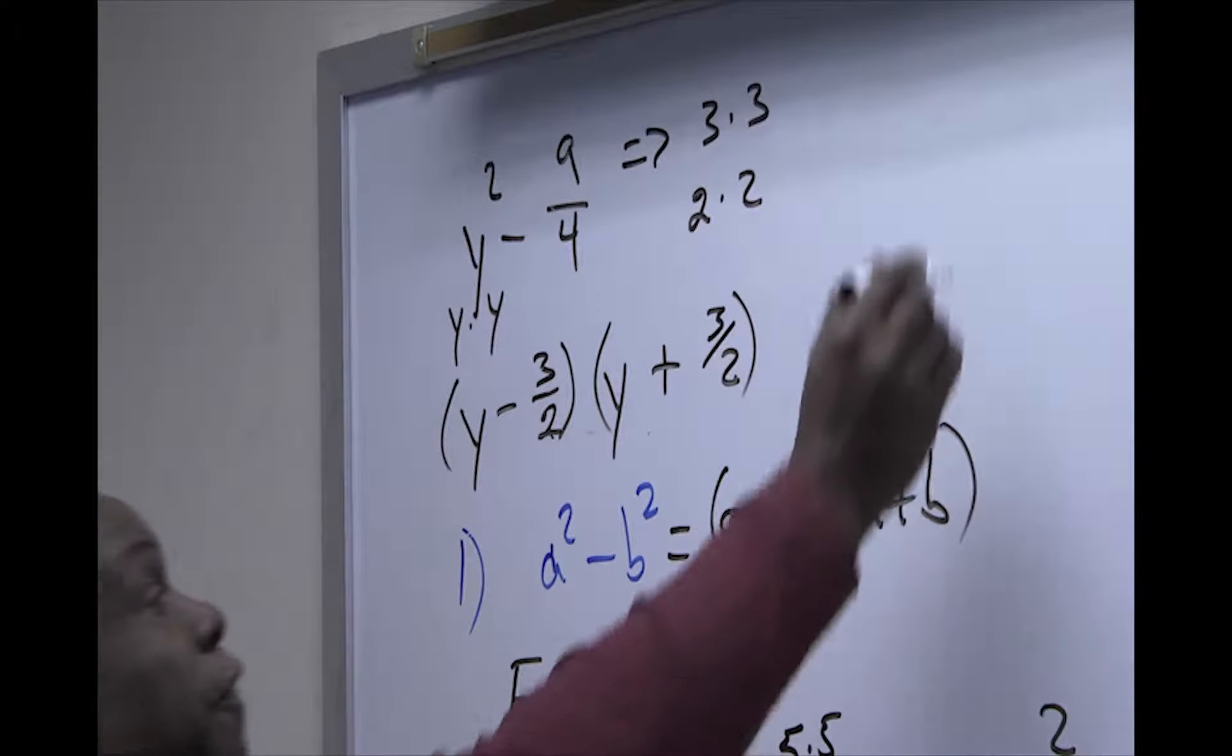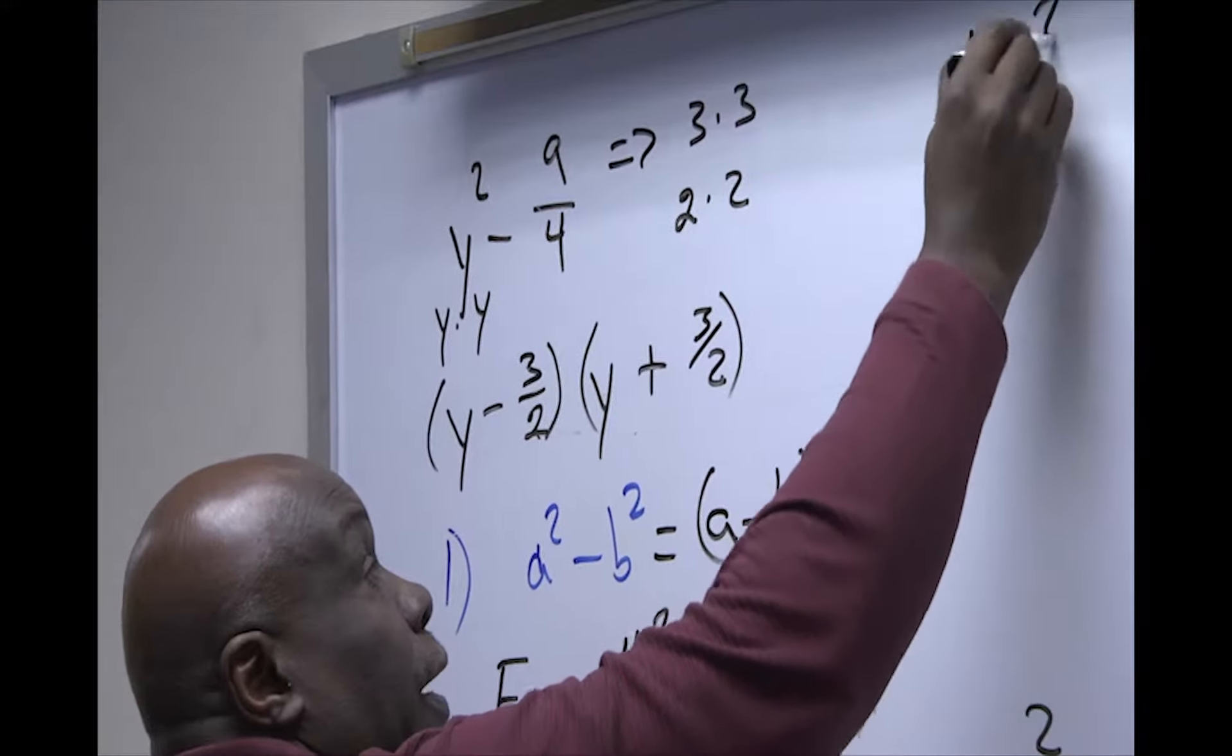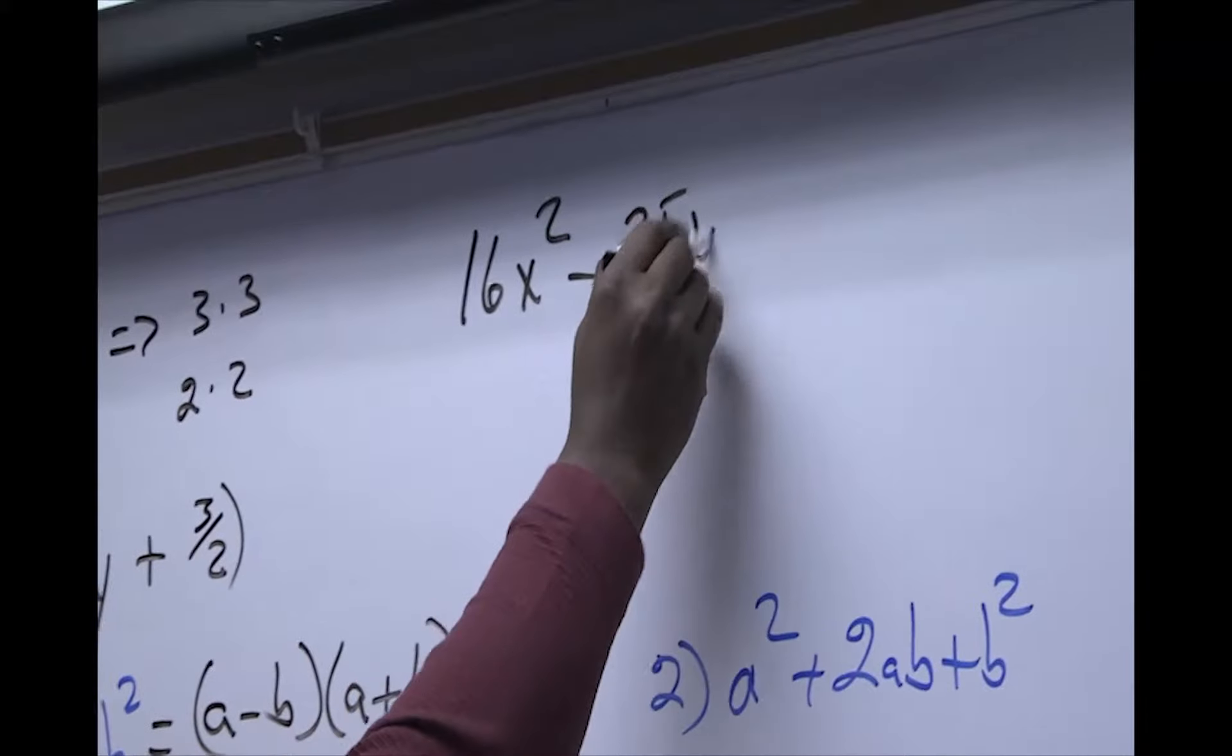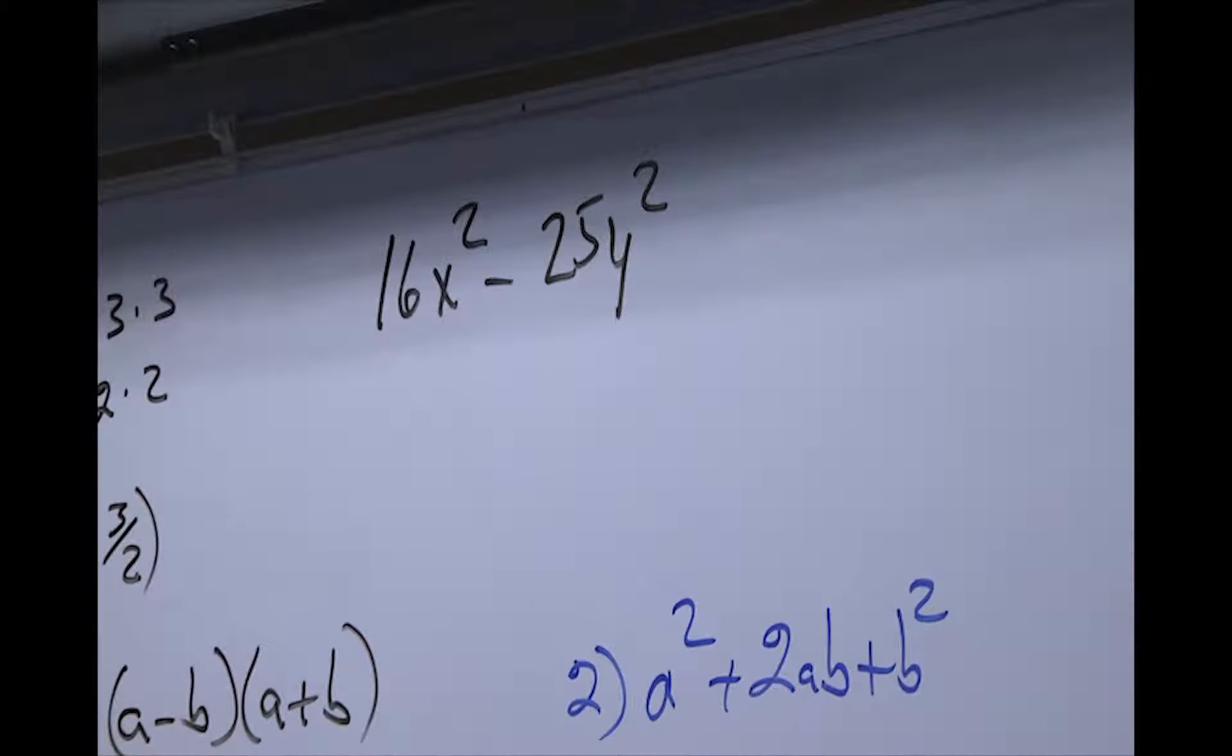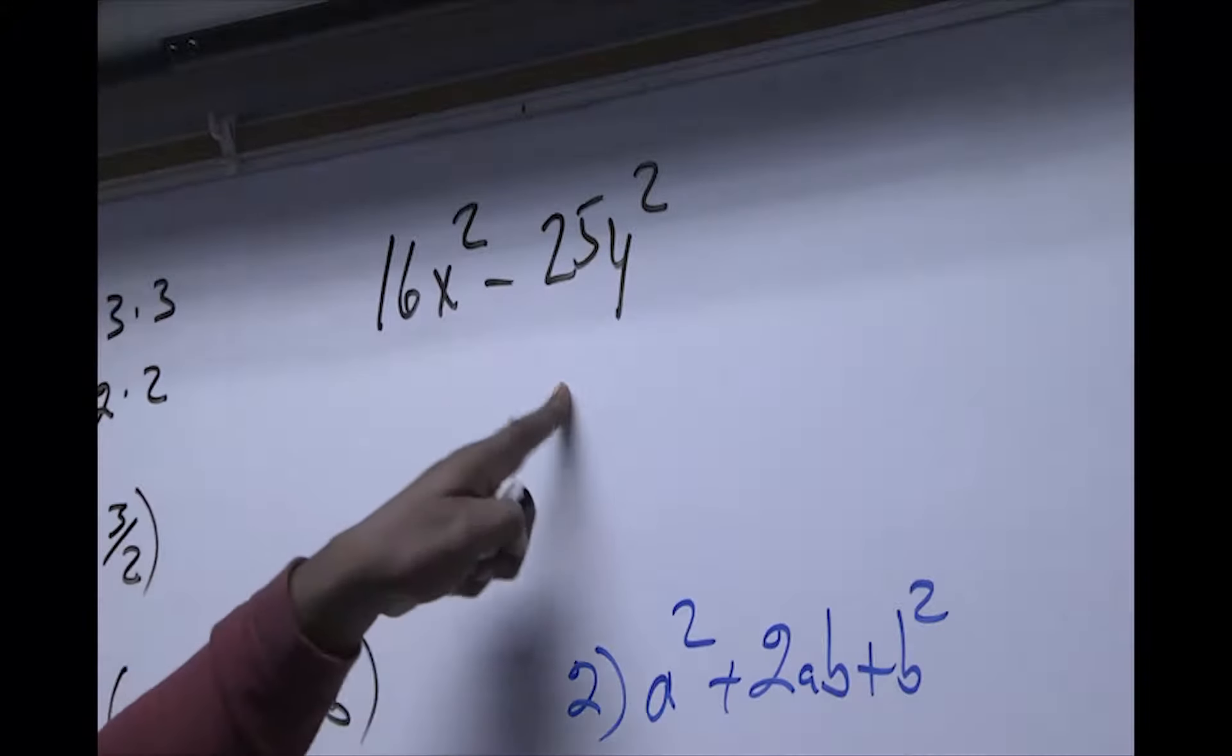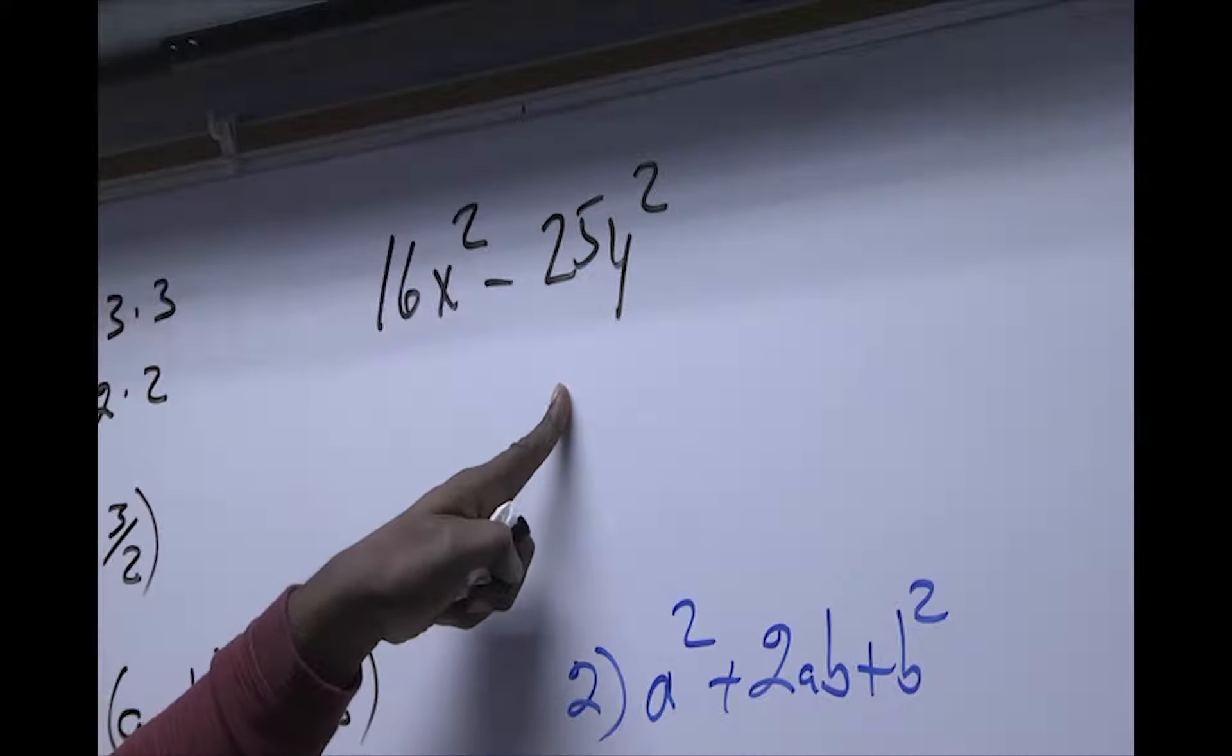Finally, let's say if we gave you 16x² - 25y². Likewise, you check for your common factor, always go through your steps.